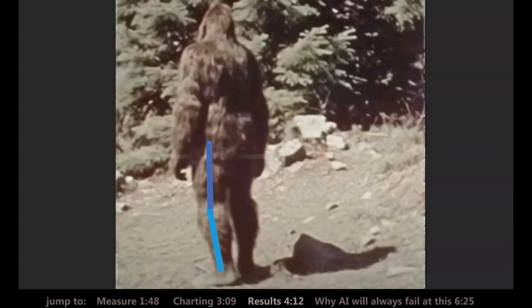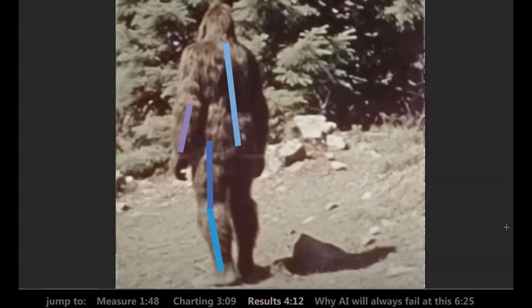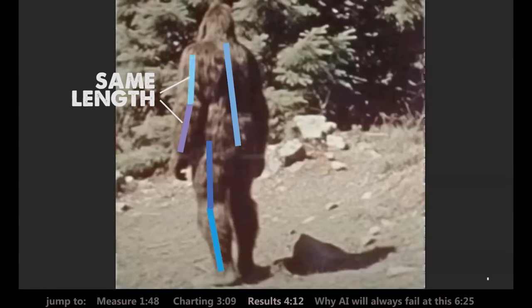So I measured from the bottom of the tailbone up to the base of the neck. Now I'm going to measure its arms just like I did its legs. We can see its wrist, we can see its elbow, so we've got that measurement. Then I just doubled the forearm and copied that up for its upper arm since our human forearms and upper arms are roughly the same size.